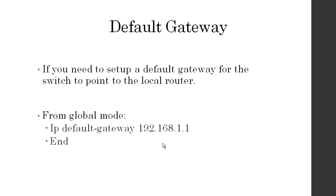Default gateway: your switch may need a default gateway. From global mode — config T — do IP default-gateway, then 192.168.1.x or whatever address. If the switch doesn't know where a packet goes, that's how you set the default gateway.